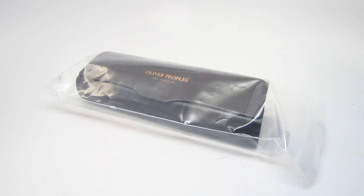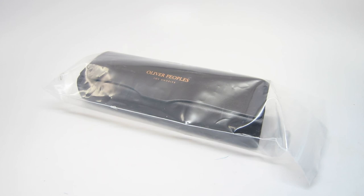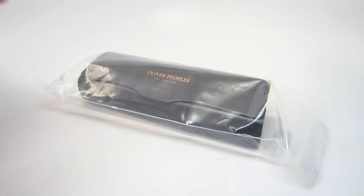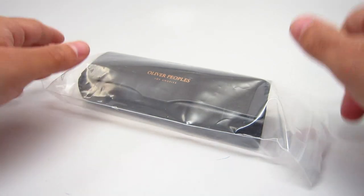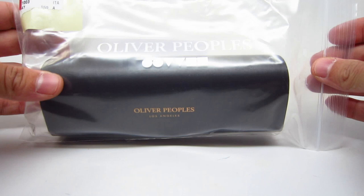What's up guys? Today we're going to be unboxing the Oliver Peoples Gregory Peck. The model number is OV5186. It also has the name Gregory Peck. It's probably Oliver Peoples' top 5 best-selling eyeglasses.